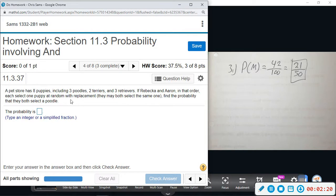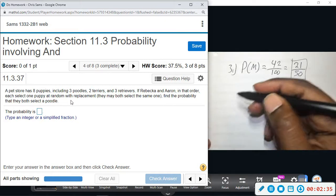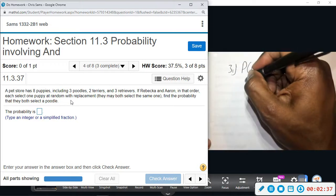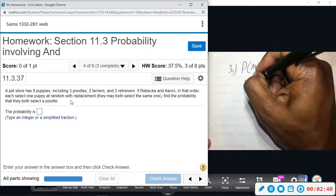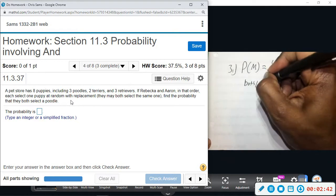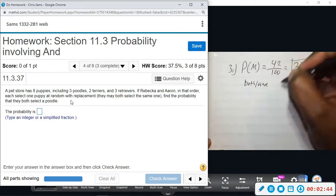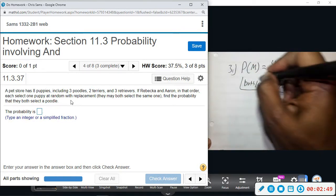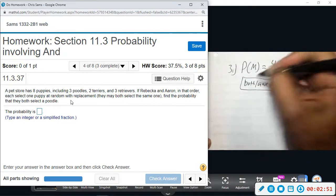They both may select the same one. So that means if somebody selects one poodle, they put it back and the other one just randomly gets one. It's possible that they get the same one. We're going to find the probability that they both select a poodle. Alright, so here's how this works: both and means multiply. The word 'and' tells you to multiply with probability - keep that in mind.